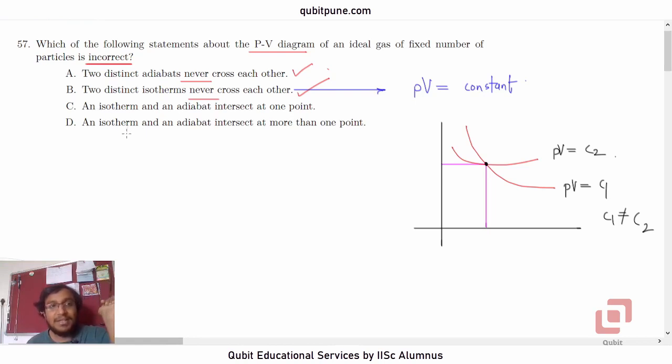Option C and D say an isotherm and adiabate intersect at one point or more than one point. This logically allows us to conclude that they must intersect at least once. Whether they intersect multiple times, we don't know, but at least once. Because it has to be option C or D and both of them imply that at least once they intersect.